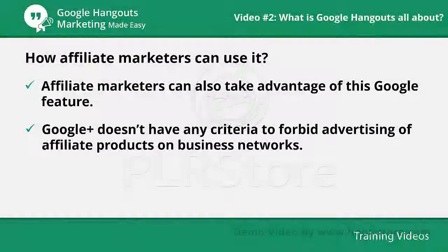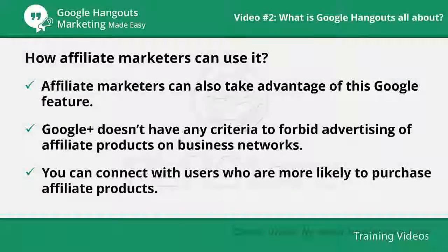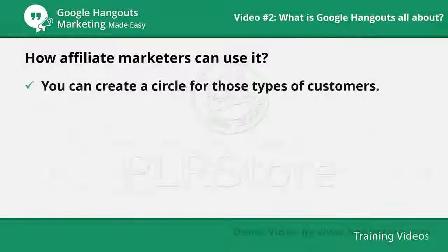As an affiliate, you can reserve Google Plus authorship for the sites on which you write product reviews to provide more weight and consideration during search results. You can connect with users who are more likely to purchase affiliate products from the same niche you are promoting. Add people that are more likely to buy the affiliate products you are promoting to specific circles, and create a circle for those types of customers to share reviews and updates.